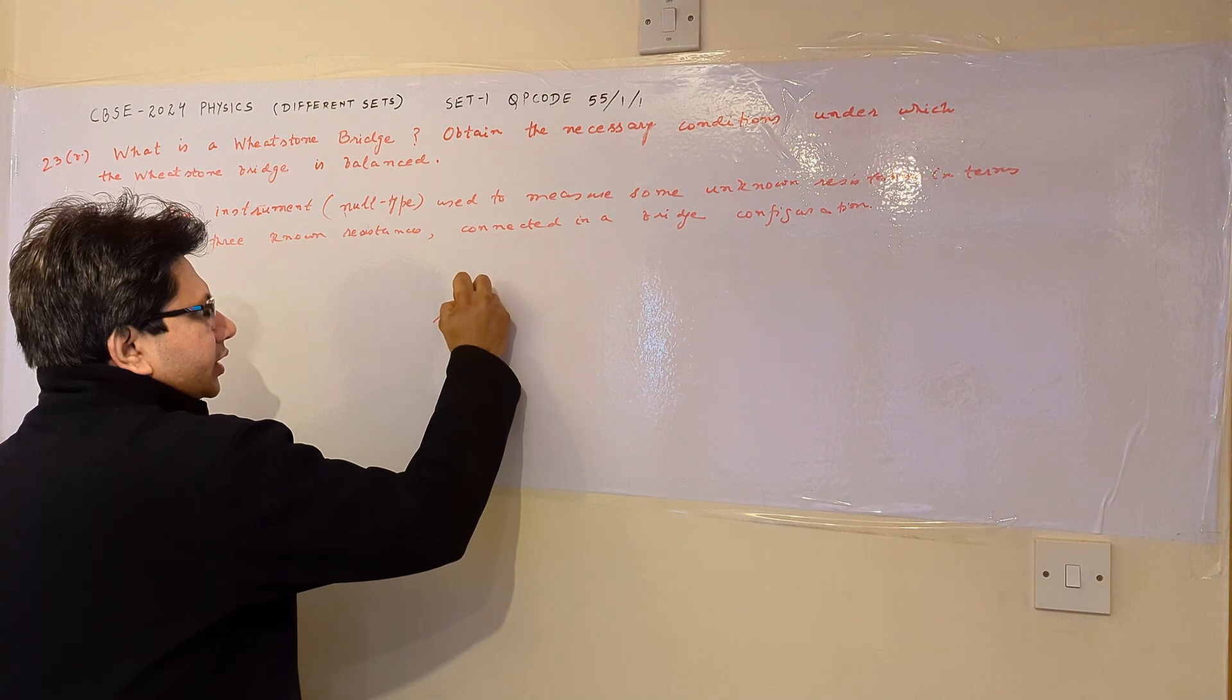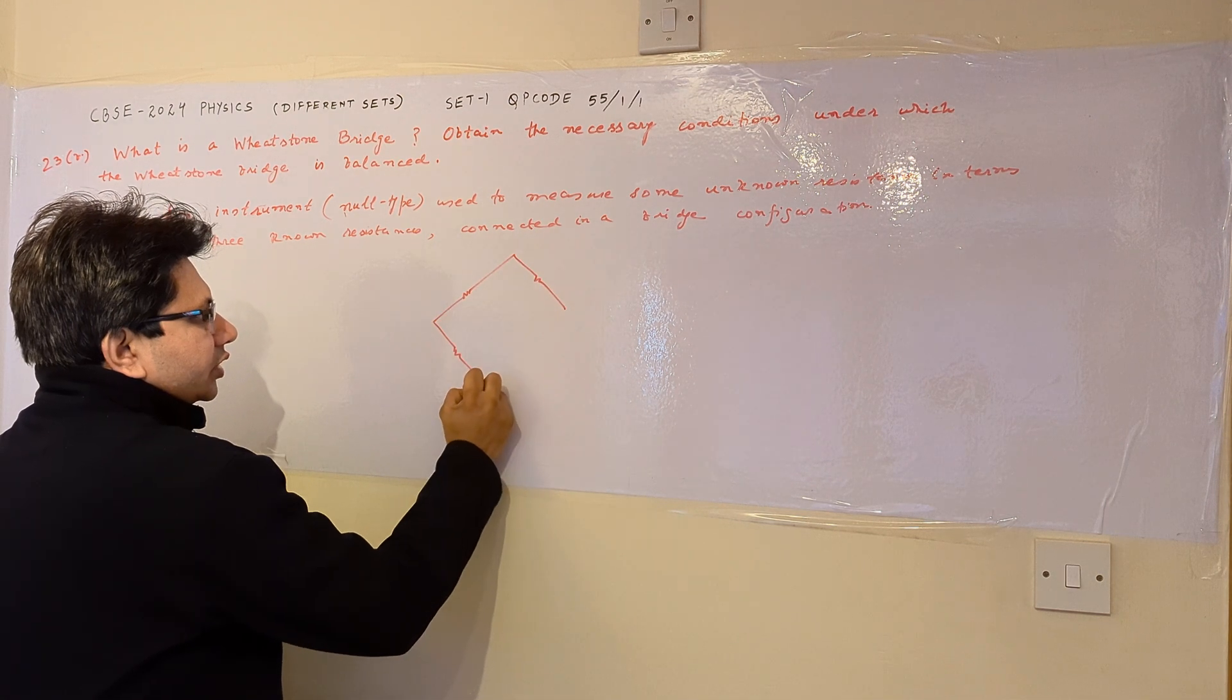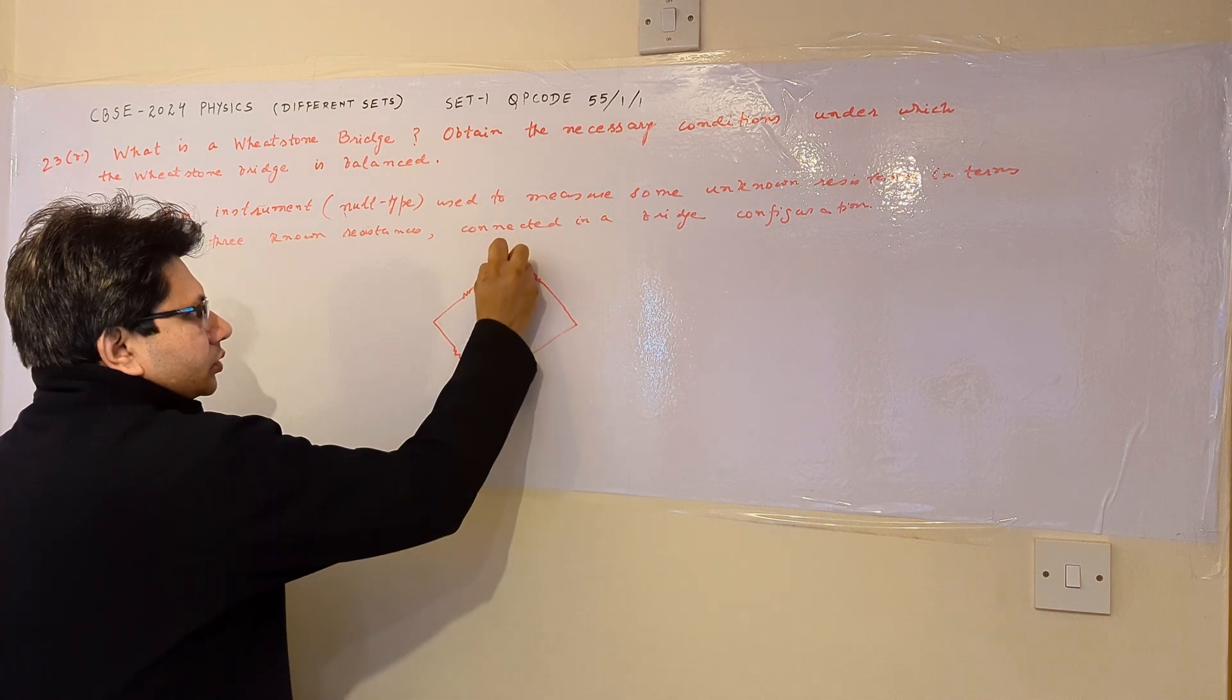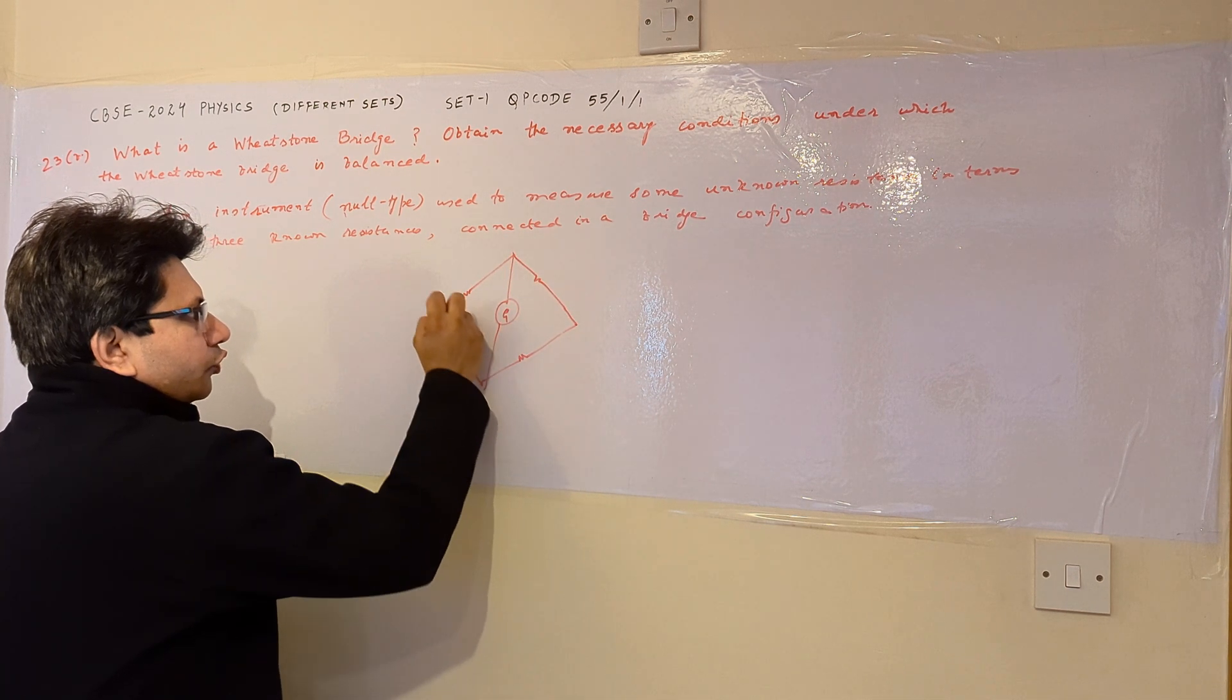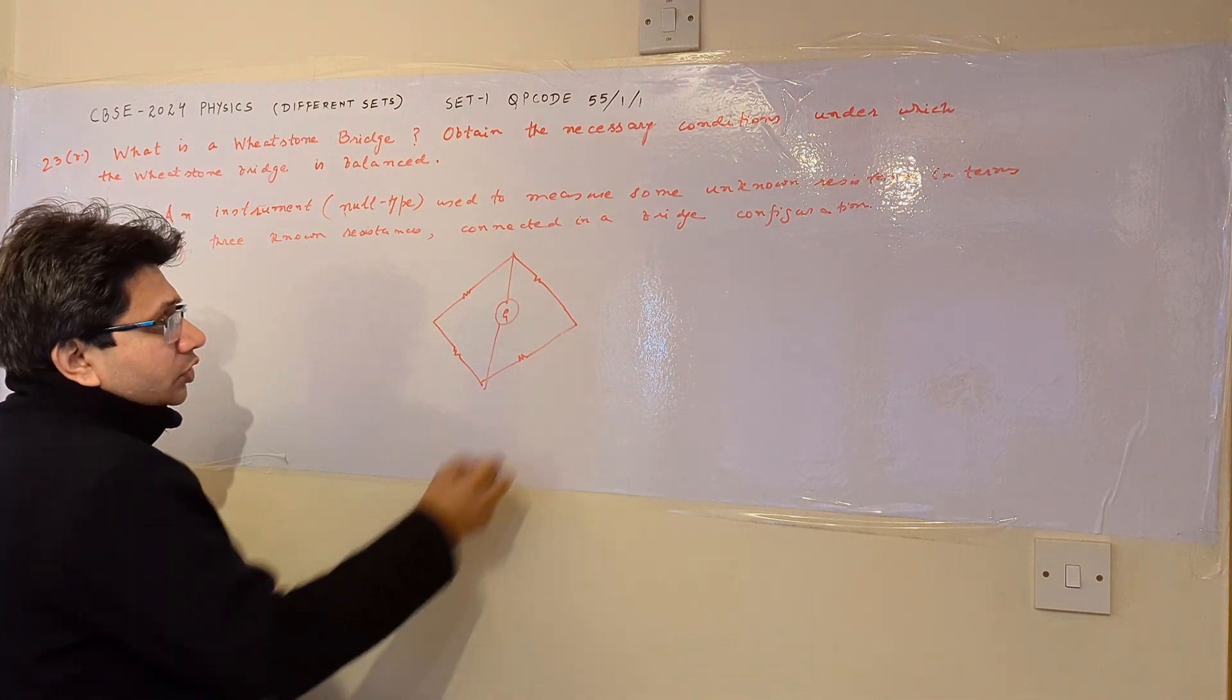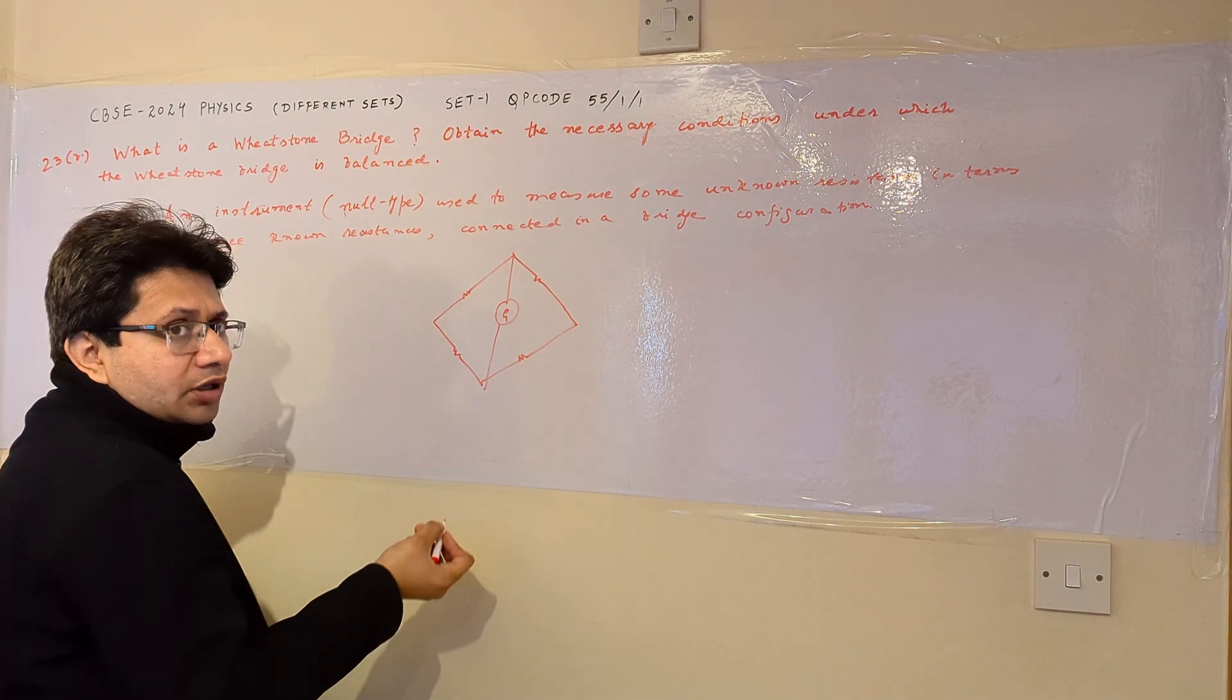So this is the circuit diagram of a Wheatstone bridge. I am drawing the circuit diagram. This bridge consists of four resistances. One of the resistors is unknown and three of them are known.